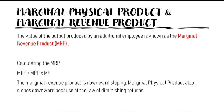MPP is Marginal Physical Product and MRP is the Marginal Revenue Product. To calculate MRP, you multiply the MPP by the Marginal Revenue, which is also price. The Marginal Revenue Product is downward sloping because of the Law of Diminishing Returns, and the Marginal Physical Product also slopes downwards.